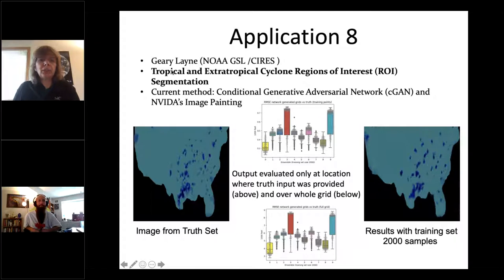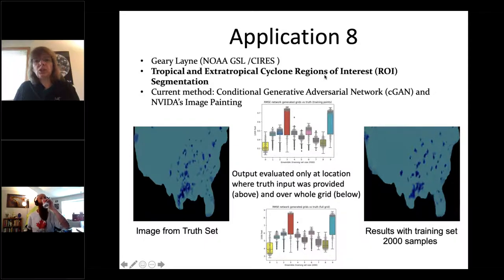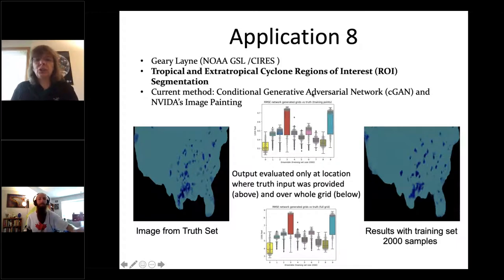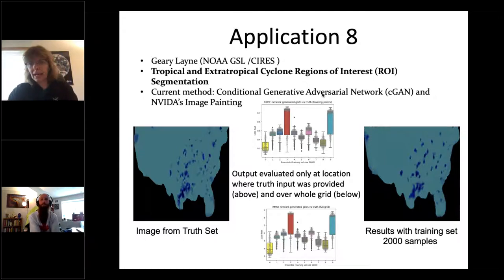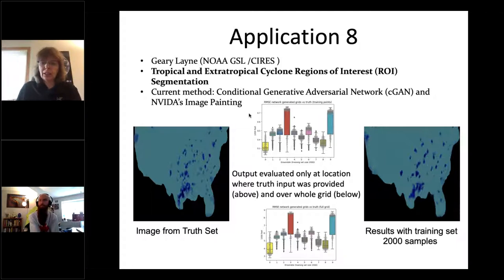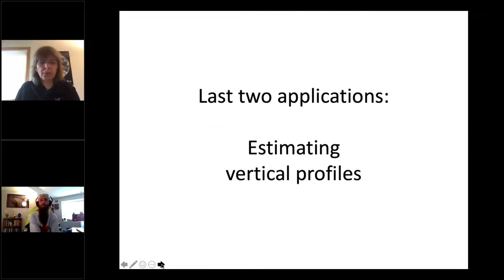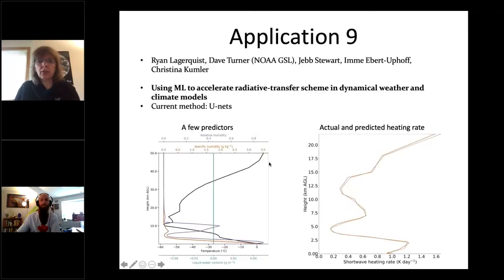Application eight, from Gary Lane at NOAA GSL and CIRES: also deals with tropical and extratropical cyclone regions of interest, but uses a more complex algorithm — a GAN, generative adversarial network. This is so far the only example using a GAN in these applications, and it gave pretty good results. We may or may not cover GANs in lecture six depending on interest. Moving on to the last two applications, which both estimate vertical profiles.